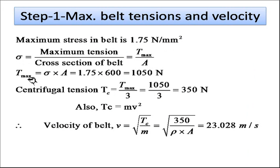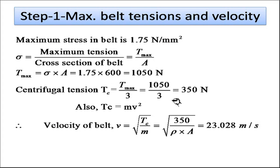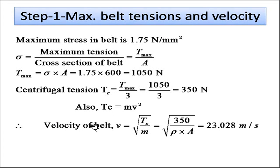For maximum power transmission, centrifugal tension Tc = T_max / 3 = 1050 / 3 = 350 N. Since Tc = mV², the belt velocity is V = √(Tc / m). We calculate m using density and cross-section area. This gives V = 23.028 meter per second.